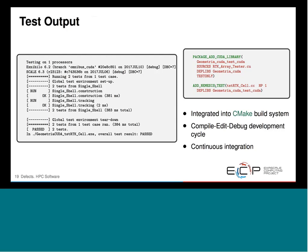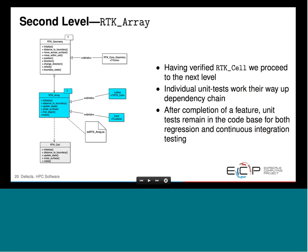These tests become a permanent part of your repository for regression and continuous integration testing. When I move up to develop the array, which contains a bunch of cells, I can use the cell as if it's correct and develop up the chain — I don't have to worry about the lowest level being incorrect. Errors that occur while developing the array have already been worked out during development of the cell.